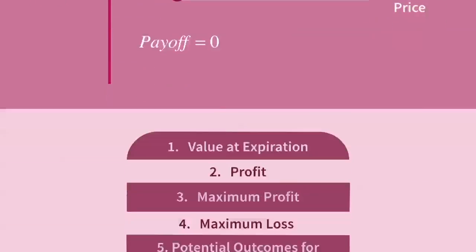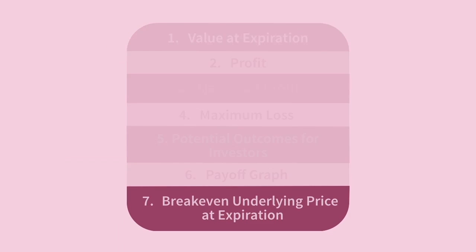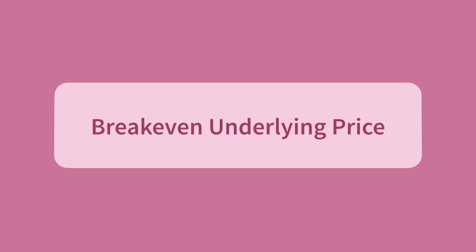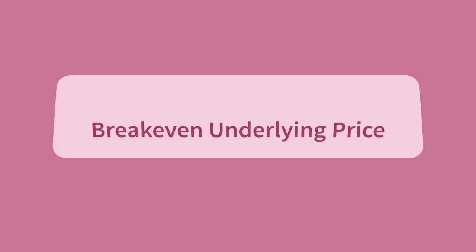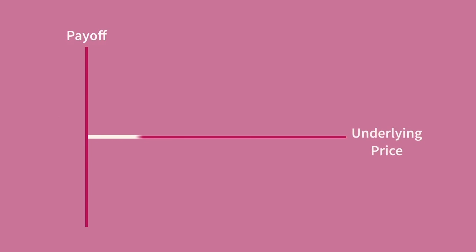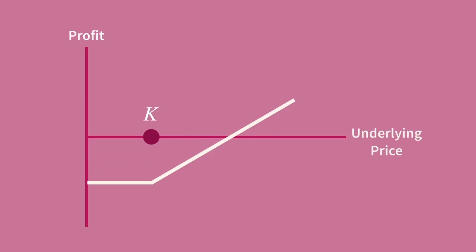The last thing to cover is the breakeven underlying price at expiration. This might be the trickiest thing to understand — some students definitely have trouble with it. Remember that if you work with the equation and the graphs of payoff and profit, you can logically work it out. Here's the payoff graph of a call option. The marker for the call's strike price is not the breakeven price of the option. Yes, it is the turning point between worthless and valuable, but for breakeven we don't look at the payoff graph — we look at the profit graph, which we get by pushing the whole thing down by the amount of the option premium.